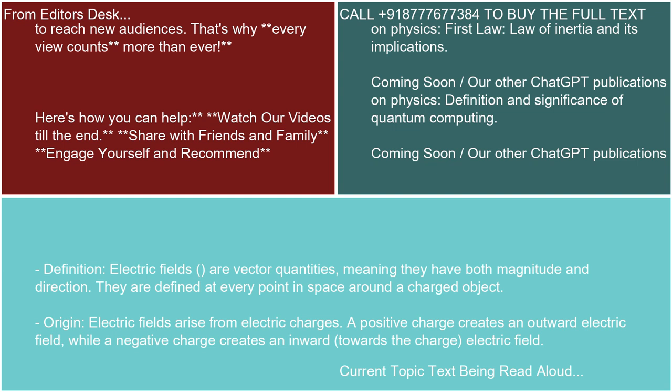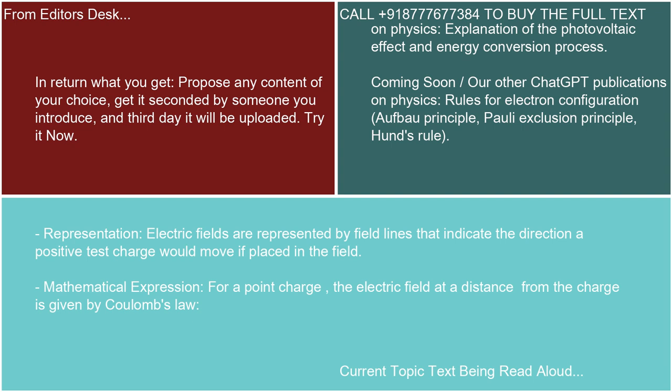Electric fields arise from electric charges. A positive charge creates an outward electric field, while a negative charge creates an inward — towards the charge — electric field. Electric fields are represented by field lines that indicate the direction a positive test charge would move if placed in the field.